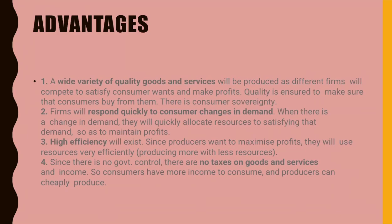Second, firms respond quickly to changes in consumer demand by allocating resources to satisfy that demand and maintain profits. Third, high efficiency — producers want to maximize profits and maintain competitiveness, so they use resources very efficiently to produce more with fewer resources. Fourth, there is no government control, so no taxes on goods, services, or income, meaning consumers have more income to spend and producers can produce cheaply.